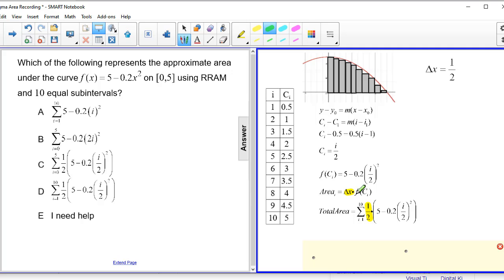And f(c_i) is this entire expression right here: 5 - 0.2(i/2)². And also note that we are summing from 1 to 10. 1 is our first interval, 10 is our last interval. So our correct answer is going to be D.